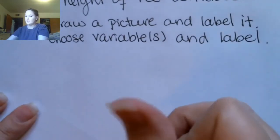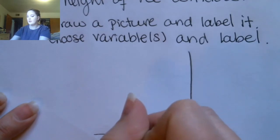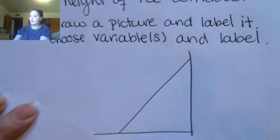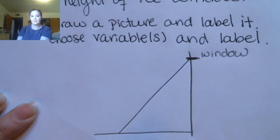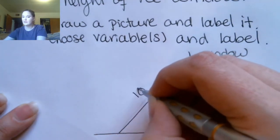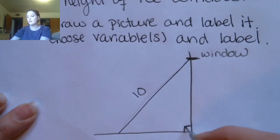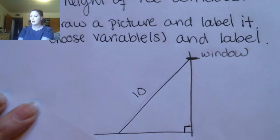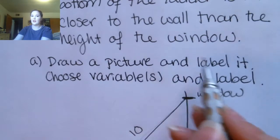Here's the ground and here's a wall. I have a 10-foot ladder that's propped against the wall and it reaches this window. The ladder itself is 10 feet, so I know that this length is 10 feet. I'm going to mark this as a right angle because the ground and the wall meet in a right angle. The problem says the bottom of the ladder is two feet closer to the wall than the height of the window.